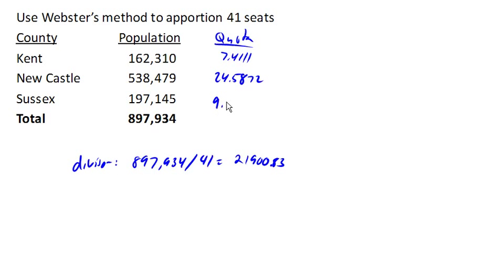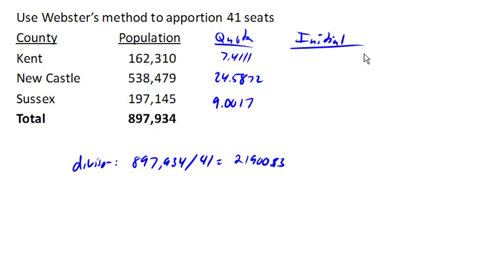Webster's method is an adjust-the-divisor method, kind of like Jefferson's method, but the initial step is different. Instead of just chopping each of the quotas down to the integer value, we're going to round the values to the nearest integer.